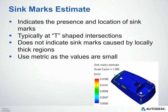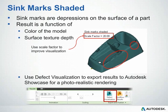When looking at the sink mark estimate plot, use metric as the values are very small. The Sink Mark Shaded plot visualizes depressions on the surface. Since they can be very small, there is an option to adjust the scale factor to better isolate where sink marks could be forming. In reality, how noticeable sink marks are depends on the model color and surface texture. There are additional tools to export to Showcase, which gives a more photorealistic rendering — you can even add texture or change the color to see if you can hide the sink marks. If you can't hide them, you may need to rethink your processing conditions or part design.